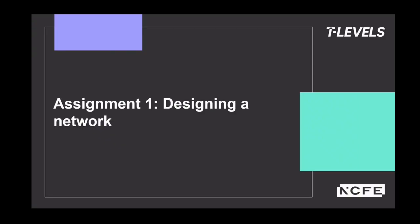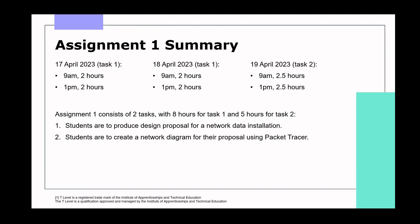We'll now look at each assignment in more depth, beginning with assignment one, where students produce a proposal for a network installation including a network diagram. The first assignment is conducted over three days on dates and times set by NCFE. There are two tasks: task one is a network proposal meeting the needs of the brief, conducted over two days with AM and PM sessions of two hours each. Task two requires students to use Packet Tracer to create a network diagram, conducted on the third day with morning and afternoon sessions of two and a half hours each.